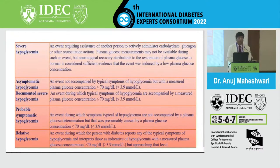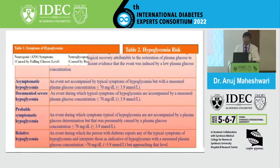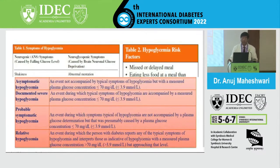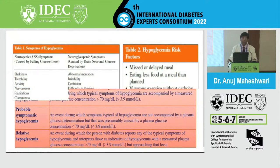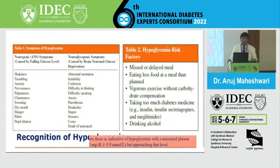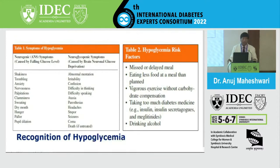There are two categories of hypoglycemia symptoms. The first is neurogenic symptoms, caused by the falling glucose level, which include: shakiness, trembling, anxiety, nervousness, palpitations, clumsiness, sweating, dry mouth, hunger, pallor, and pupil dilatation.